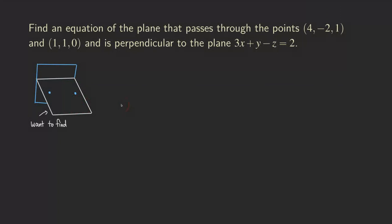The question is: how do we find this plane drawn in white? Remember, when we try to find an equation of a plane, we need two things. One is a point that lies in the plane — we actually have more than enough, we have two points. The other thing we need, which usually requires some calculation, is the normal vector of the plane — a vector that's perpendicular to the plane.